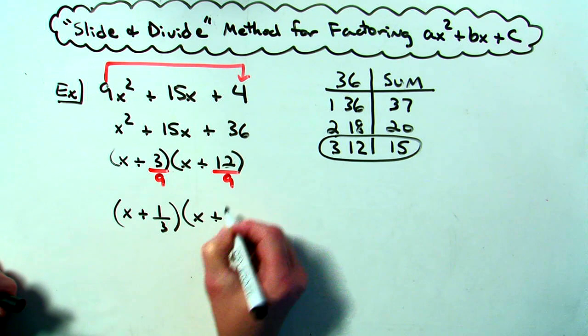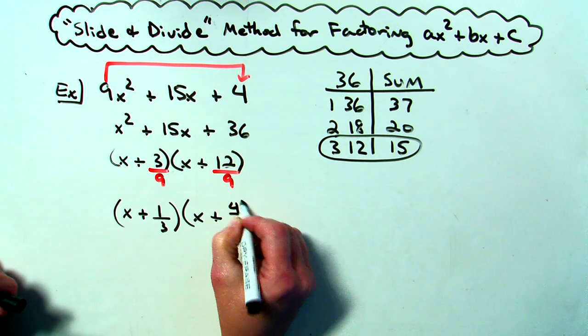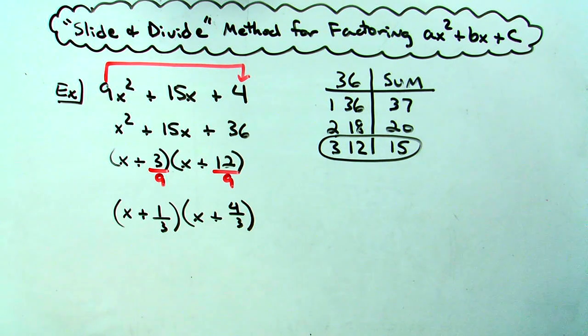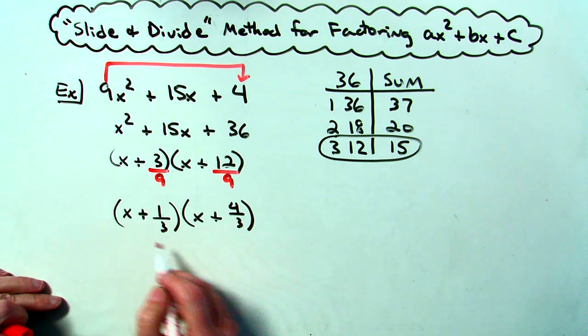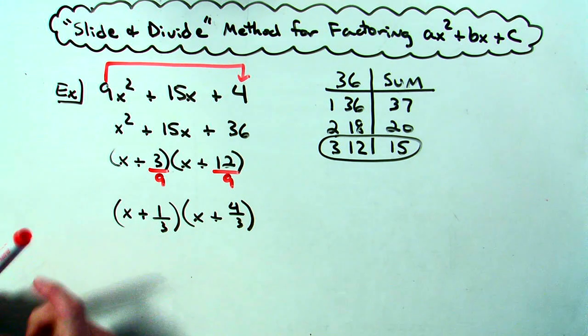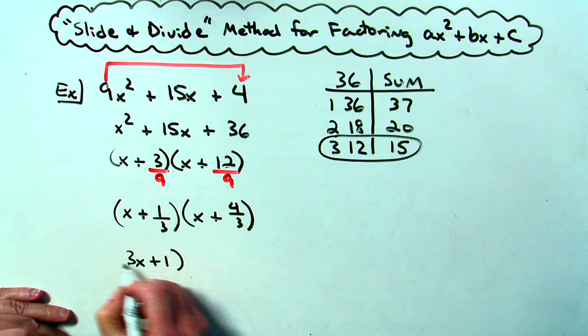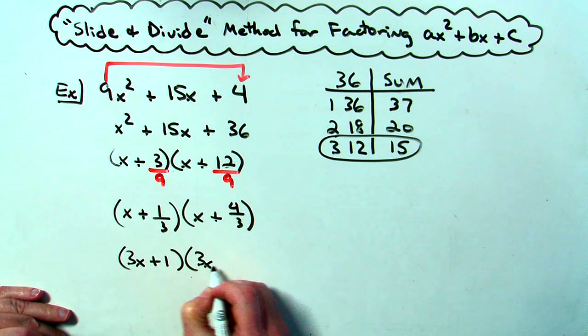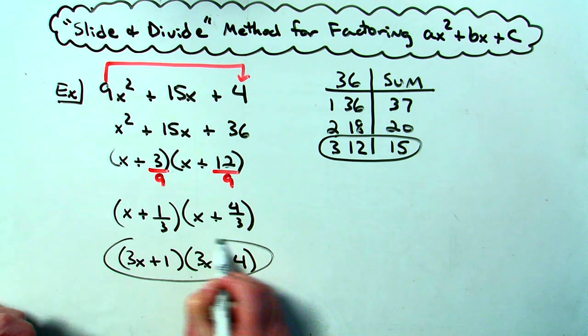And then an x plus reducing this, I will get a 4 thirds. Now we don't want to leave it like that. I'm still going to do that pulling out in front. This is the part I would be dividing by the 3. I can pull that 3 out there in front. So I'm going to have a 3x plus 1 and a 3x plus 4 for my final term.